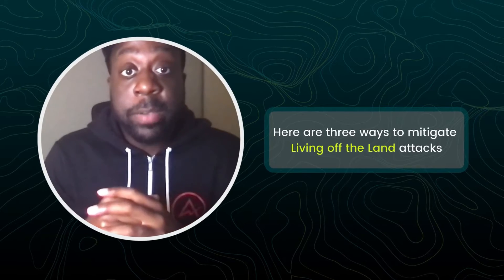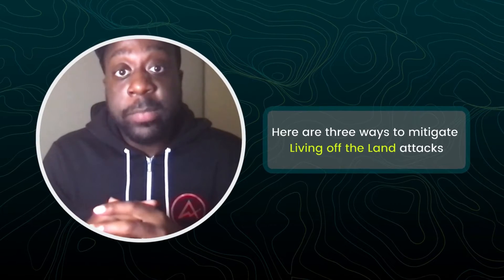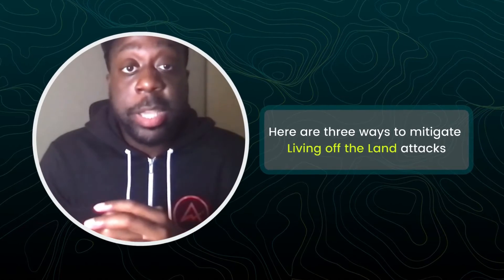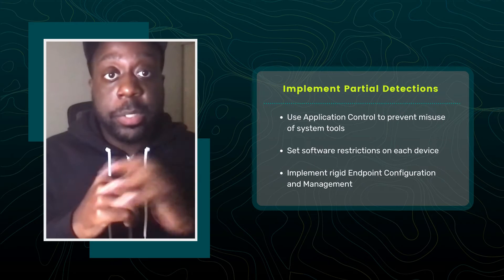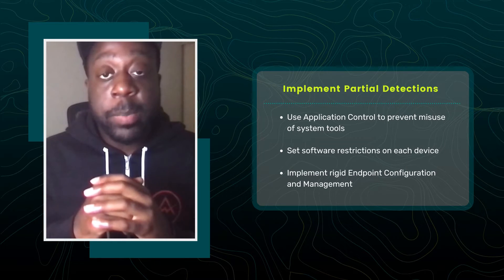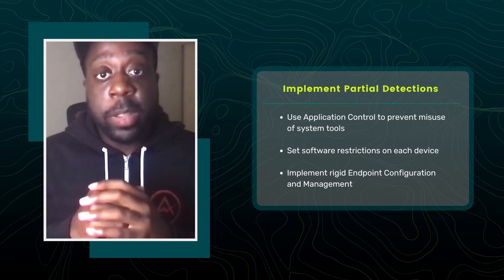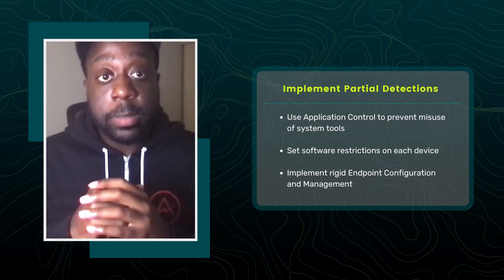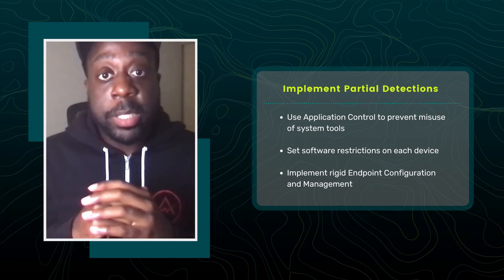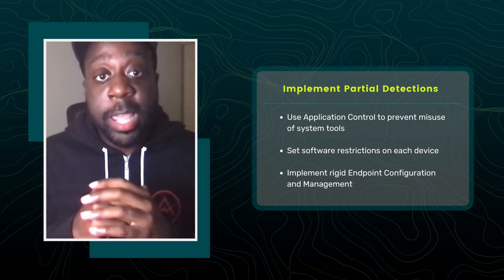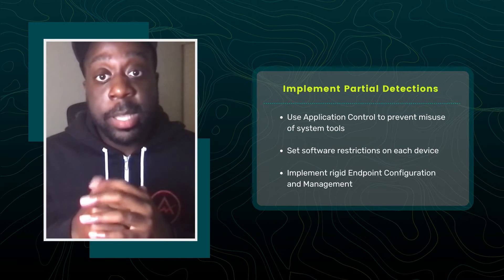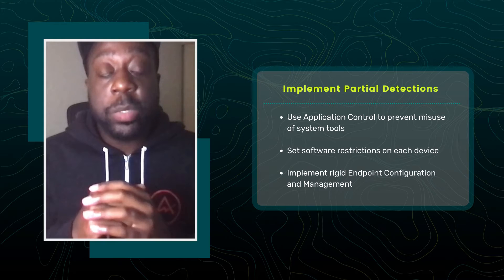Unfortunately, firewalls and antivirus won't find living off the land attacks, so how can you mitigate your risk? Here are three ways. First, IT admins can start by implementing some partial detections. Use application control to prevent misuse of system tools. Set software restrictions on each device to prevent things from running in places they shouldn't, and implement rigid endpoint configuration and management. Use endpoint behavior detection tools to block attacks.